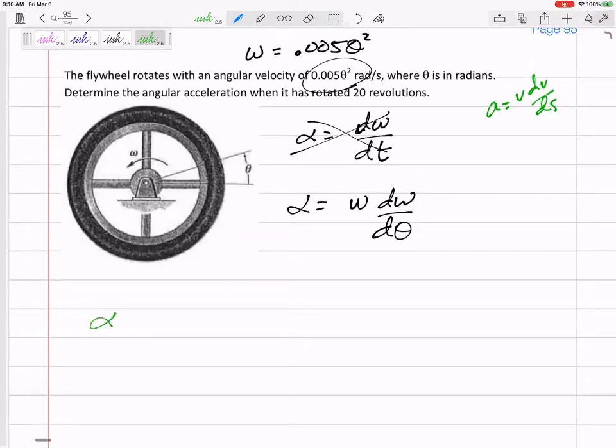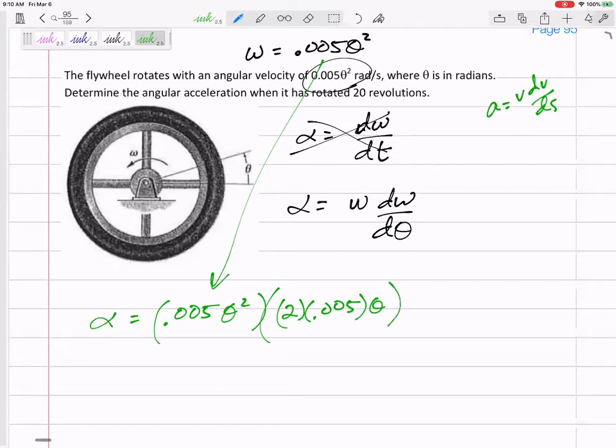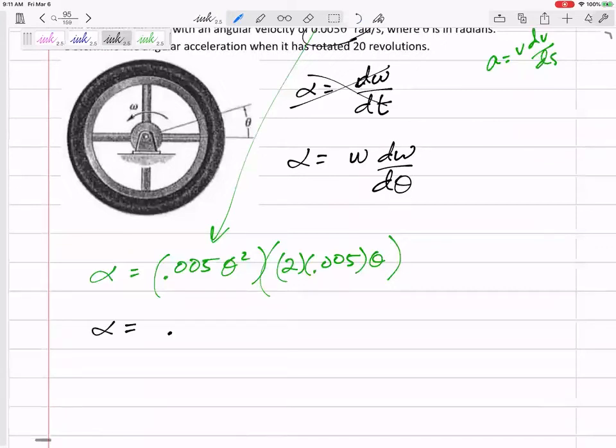So alpha equals... first, just rewrite this velocity. So first rewrite the angular velocity. Now to take the derivative of that, what would the derivative of that be? 2 times 0.005θ to the one power. So there's my equation for acceleration. And maybe I'll just go ahead and rewrite it before I start plugging things in. That's 0.00005θ cubed is my equation for acceleration.